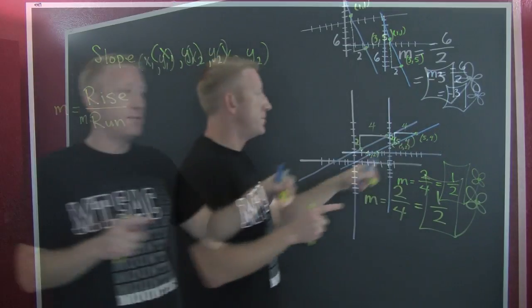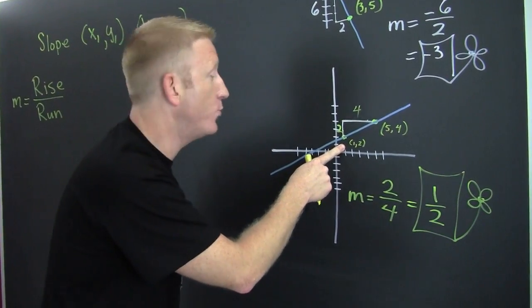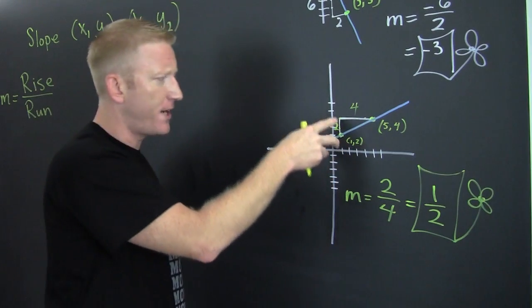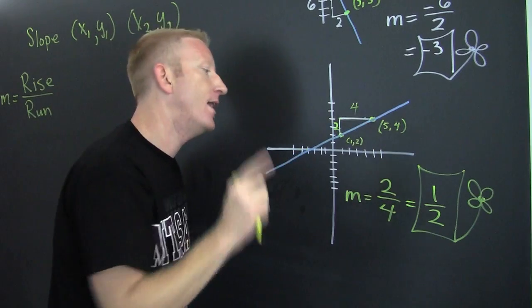So what if I had a couple of points? Last time we went through and we were talking about it's the rise over the run, and we said it rose two and it ran four.